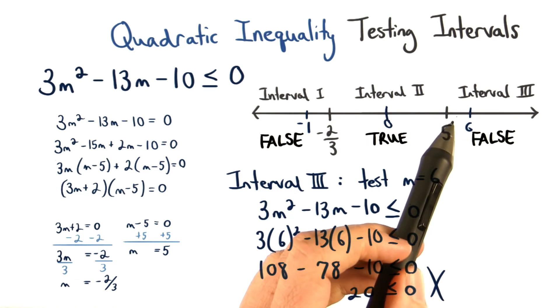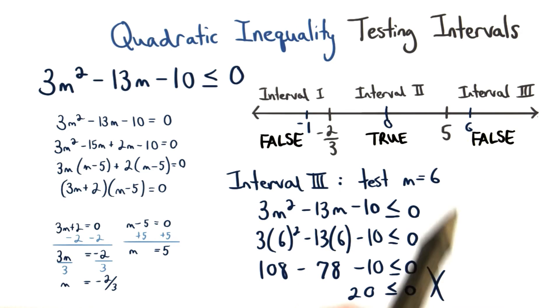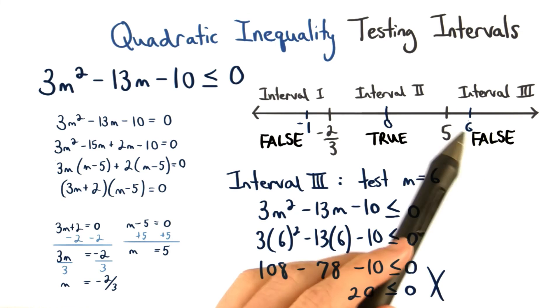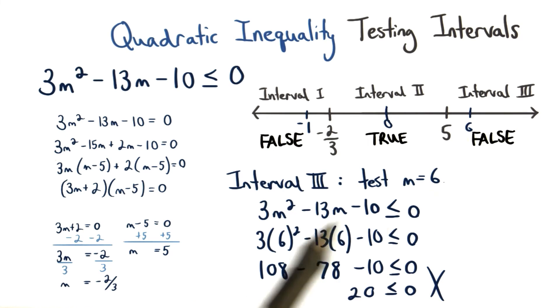Finally, we test a number in interval 3. I'm going to use the number 6. You could use other numbers; 10 would have been another great one. Plugging in 6 for m, we get the inequality 20 is less than or equal to 0. This isn't true, so this part is not included in our solution set.